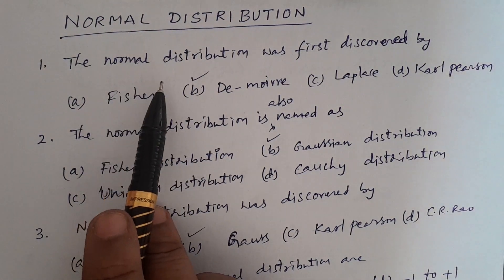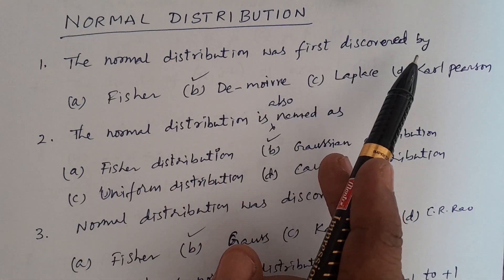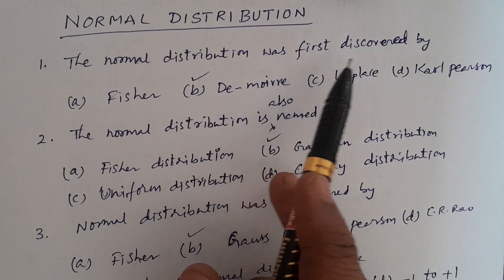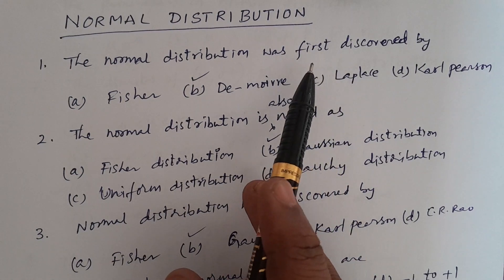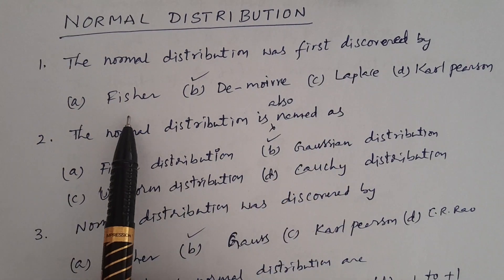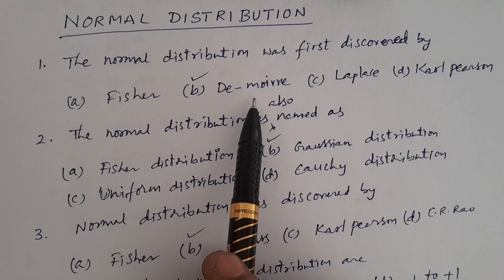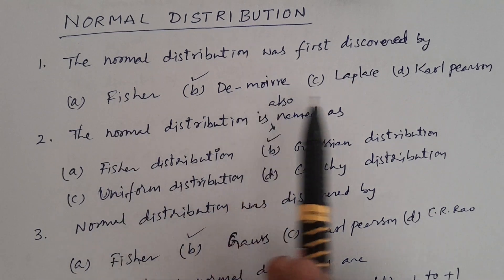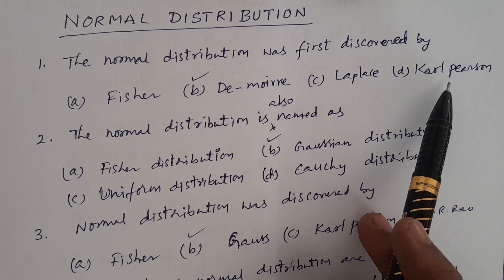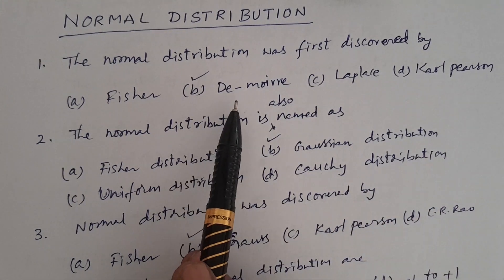Question number one. The normal distribution was first discovered by whom? Options: A. Fisher, B. De Moivre, C. Laplace, D. Karl Pearson. The answer is option B, De Moivre.